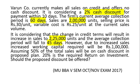Varun company currently makes all sales on a credit basis and offers no cash discount. It is considering a 2% cash discount for payment within 10 days. The firm's current average collection period is 60 days, sales are 2,00,000 units, selling price is Rs. 30 per unit, and variable cost is Rs. 25 per unit at the current sales volume.